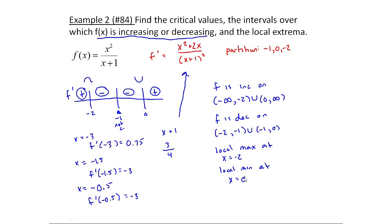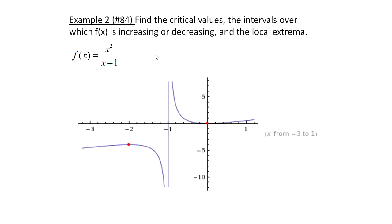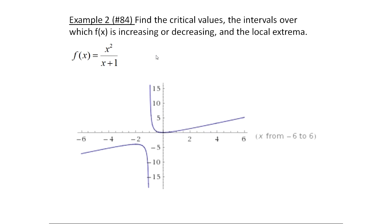The goal later will be to use all this analysis to graph the function. Looking at the graph, there are red dots where the extrema are: x equals minus two is a local max at approximately (minus two, minus five), where the function goes from increasing to decreasing. At x equals zero we have the local min, going from decreasing to increasing. The line at minus one is an asymptote — that's what was going on at that point, so there was no local min or max there.